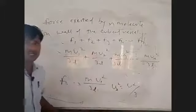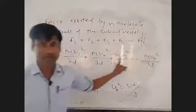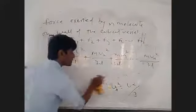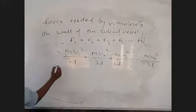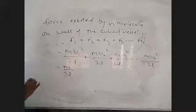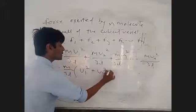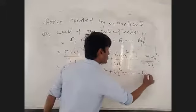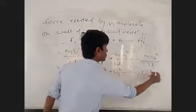Where will change? The velocity will be changed; the rest of the values will remain the same. Now let's take a common factor. What will happen in common? M upon 3L is common. And what will happen here? U1 squared plus U2 squared plus U3 squared.